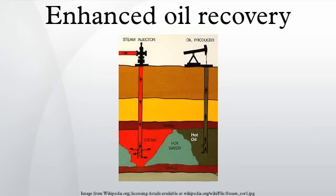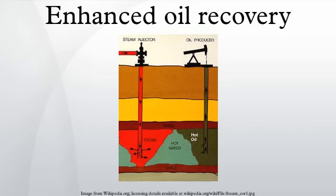Polymer flooding consists of mixing long-chain polymer molecules with the injected water in order to increase the water viscosity. This method improves the vertical and aerial sweep efficiency as a consequence of improving the water-oil mobility ratio. In addition, the polymer reduces contrasts in permeability by preferentially plugging high-permeability zones. This forces the water to flood the lower-permeability zones and increases the sweep efficiency. Surfactants may be used in conjunction with polymers; they decrease the surface tension between the oil and water, reducing residual oil saturation and improving the microscopic efficiency of the process.